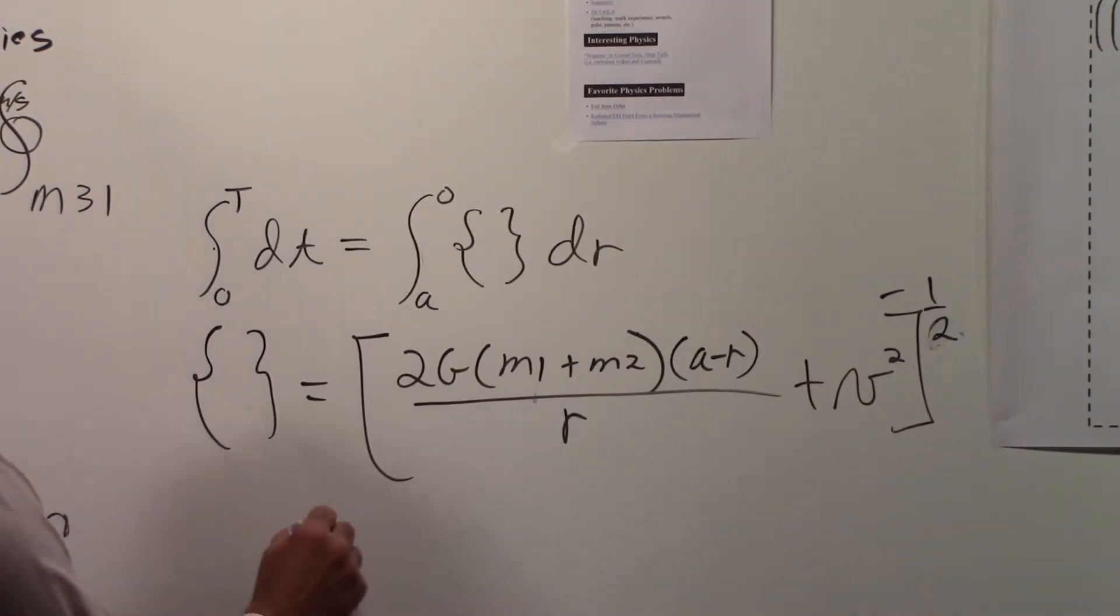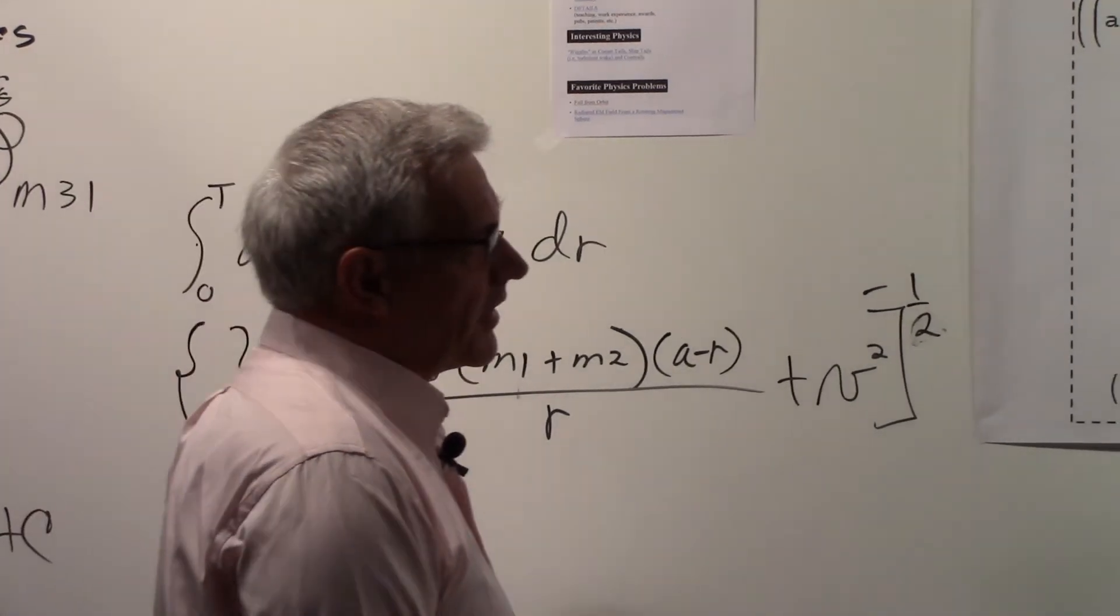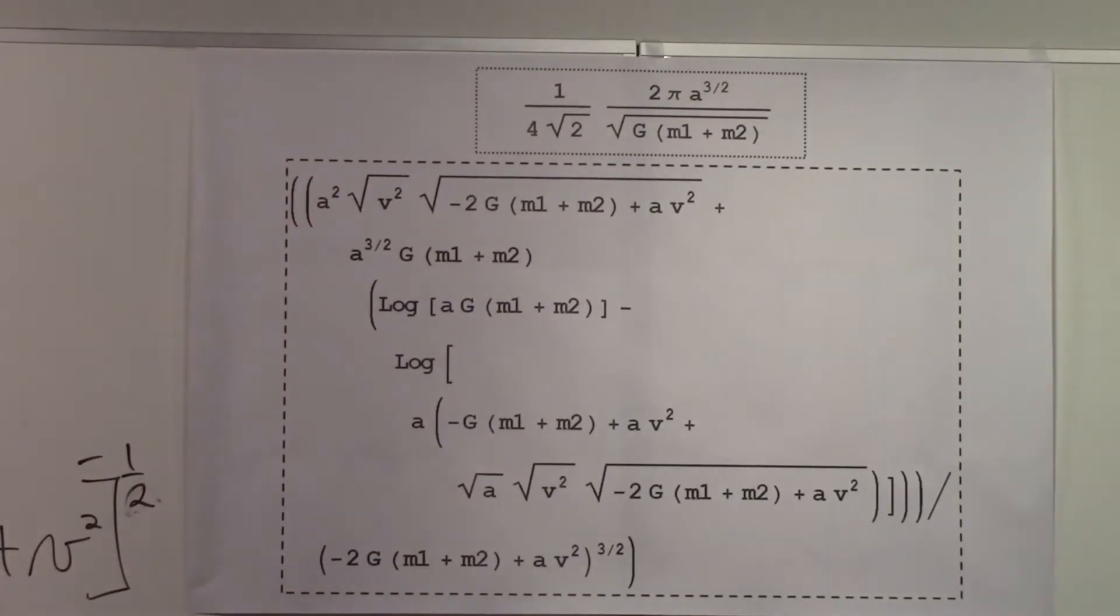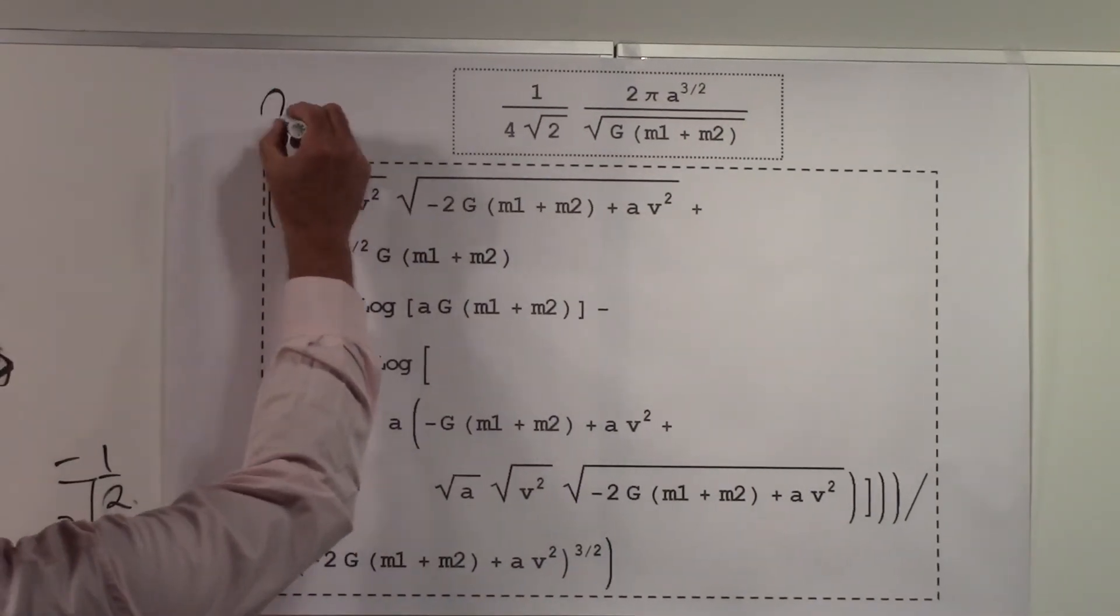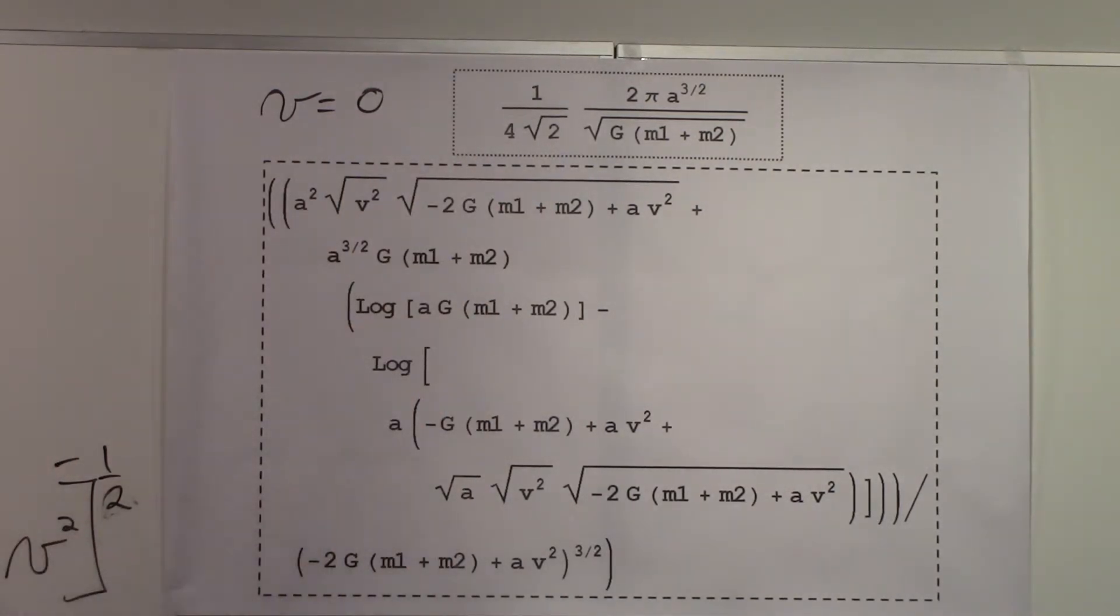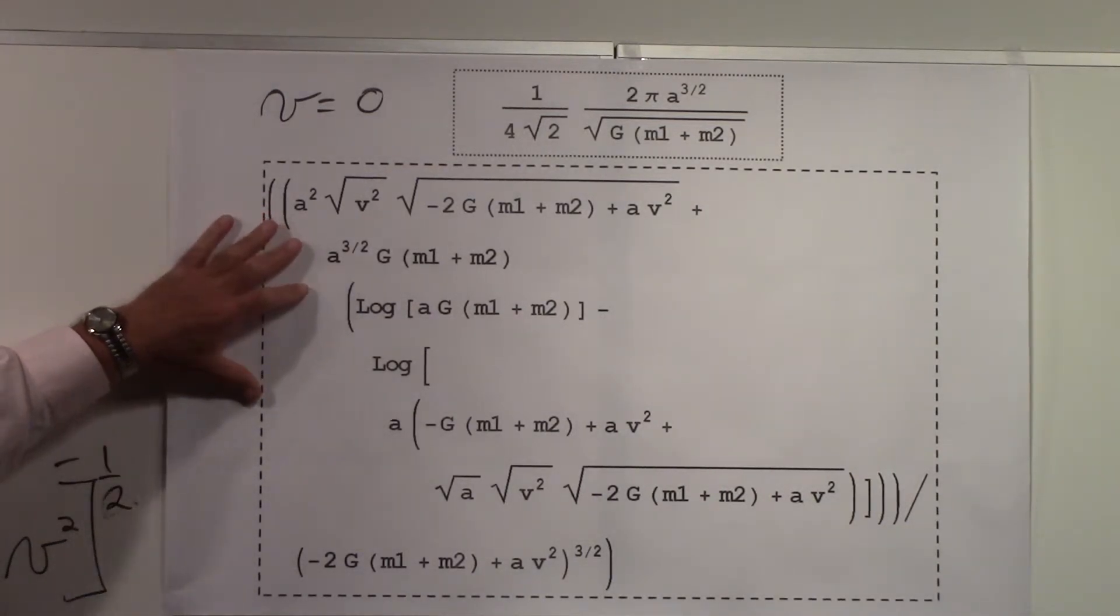If we do that, we get a much more complicated expression. When V was equal to zero, this is what we got for the period. That was the expression that I had earlier. When V is not equal to zero, this is the expression that you line up with.